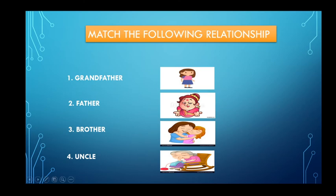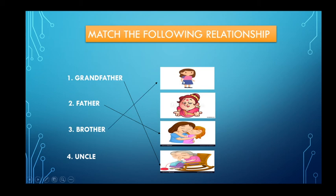Name the following relationships: Your grandfather is related to your grandmother. Your father is related to your mother. Your brother is related to your sister. And your uncle is related to your aunt. These are the relationships — grandfather to grandmother, father to mother, brother to sister, uncle to aunt.